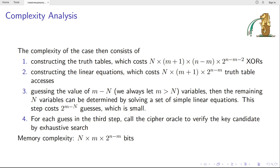So for each guess in the third step, call the cipher oracle to verify the key candidate by exhaustive search. And we believe the exhaustive search is the dominant part of the complexity. Because the steps, the previous steps, contains only bit operations. And compared to the initialization of the stream cipher, they are small. The memory complexity is n times m times 2^(2n-m) bits to store the m truth tables.